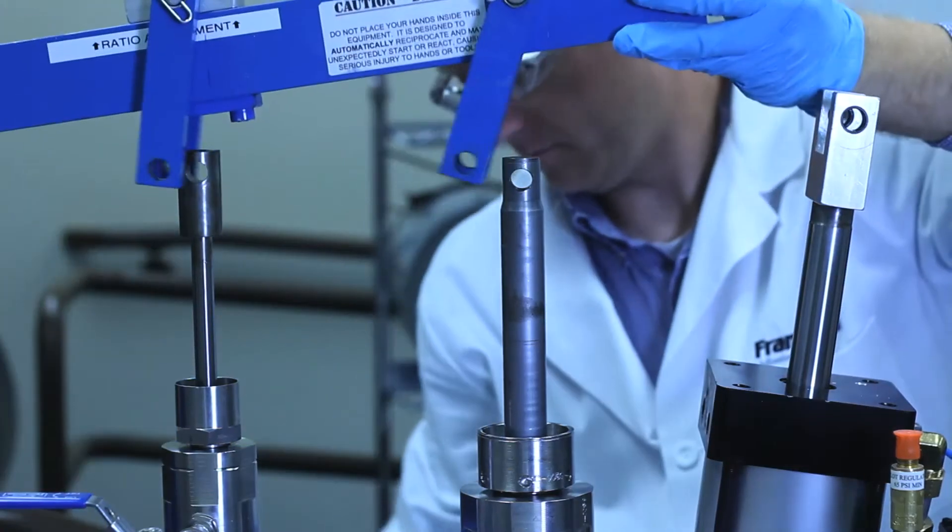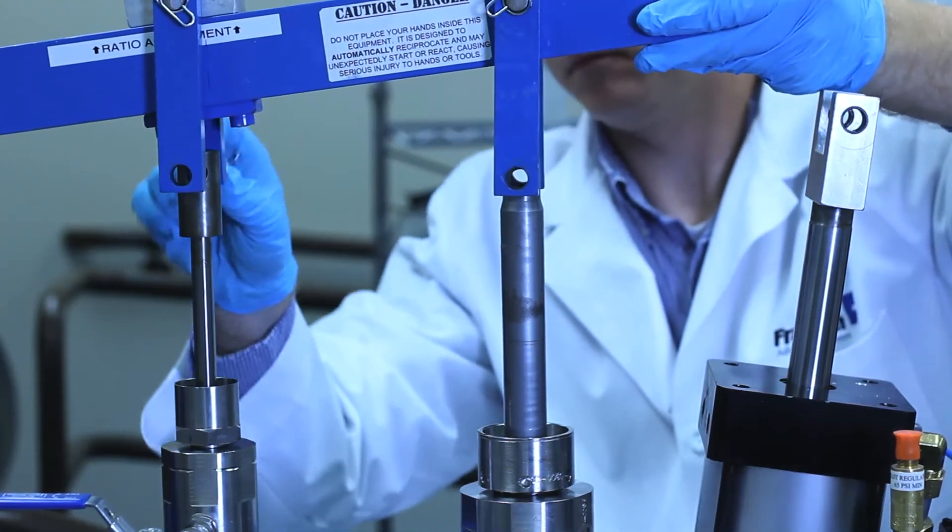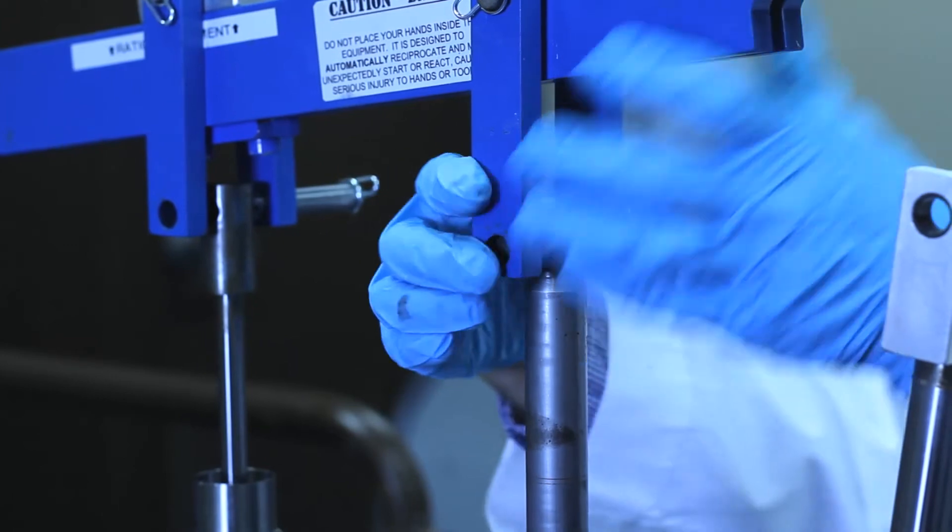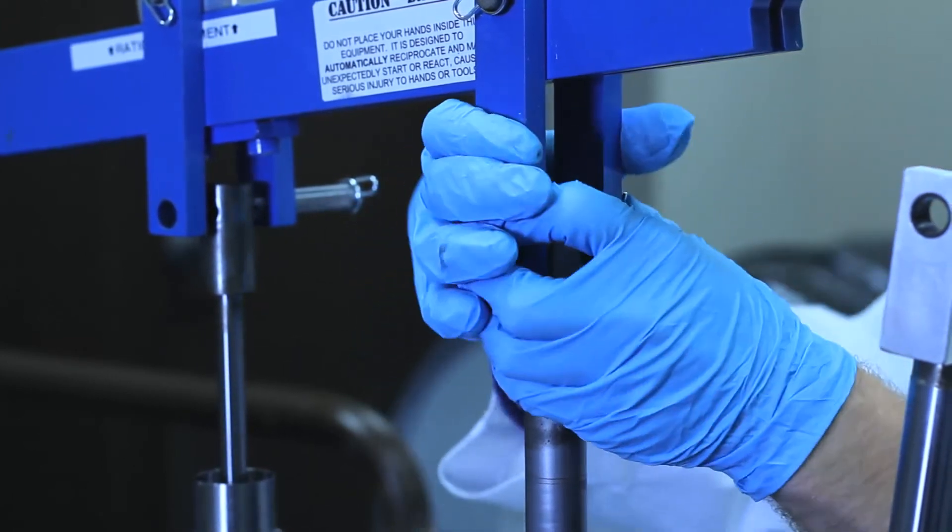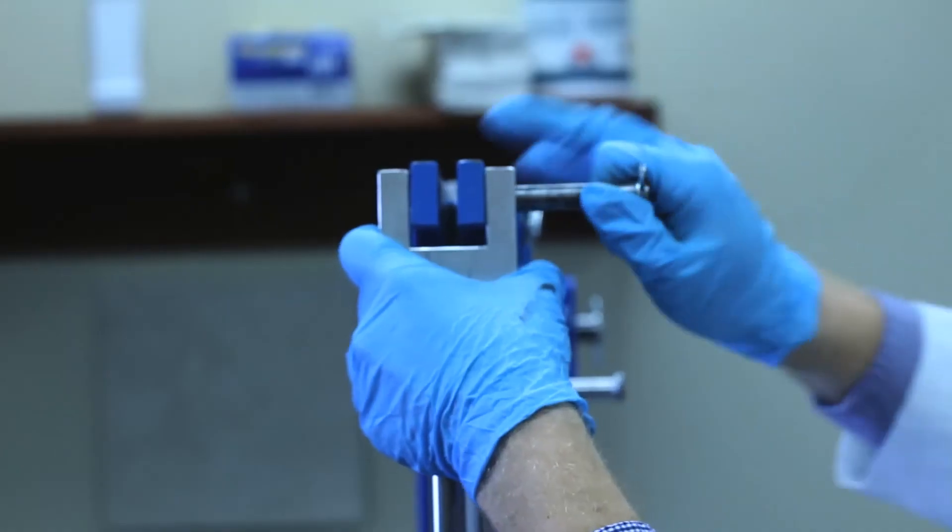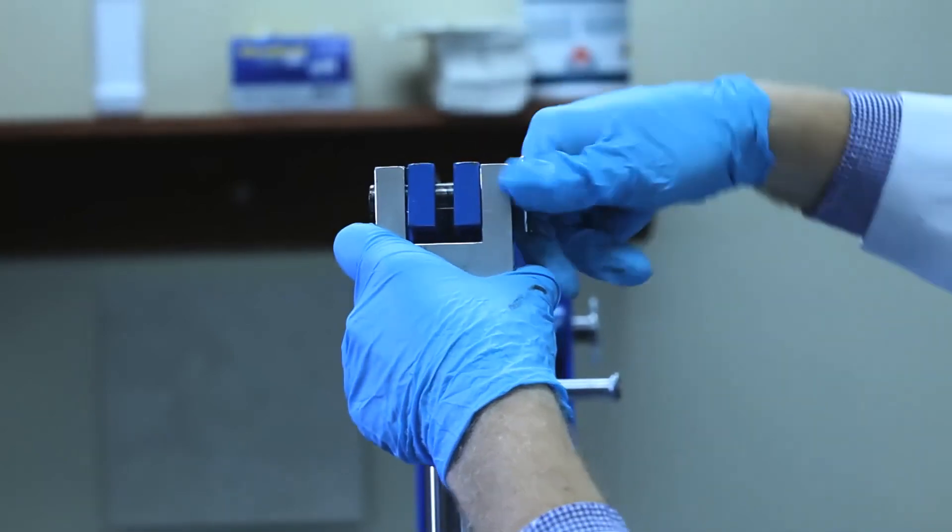Once both pumps are primed, swing the pivot arm back in place and reinstall the pins in each of the cylinders. Be careful to keep the piston aligned so the reinstallation goes smoothly because the pins are a snug fit.